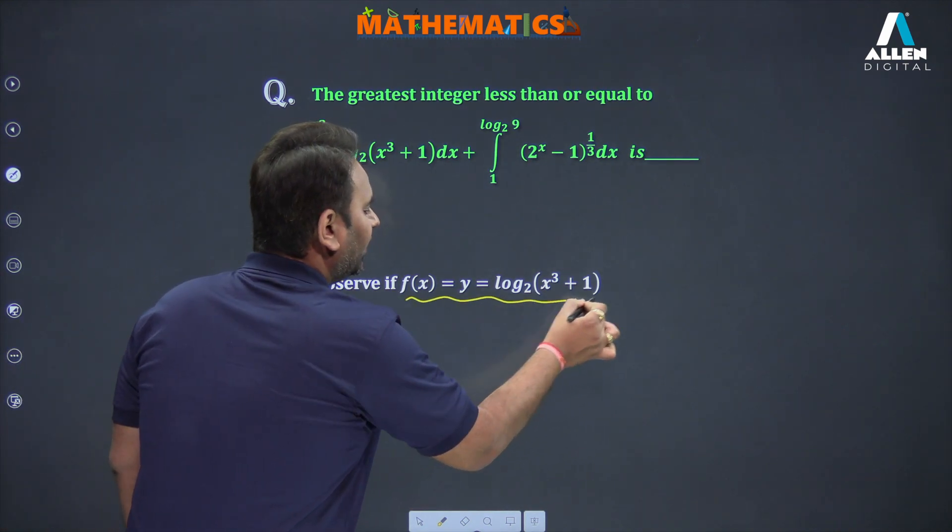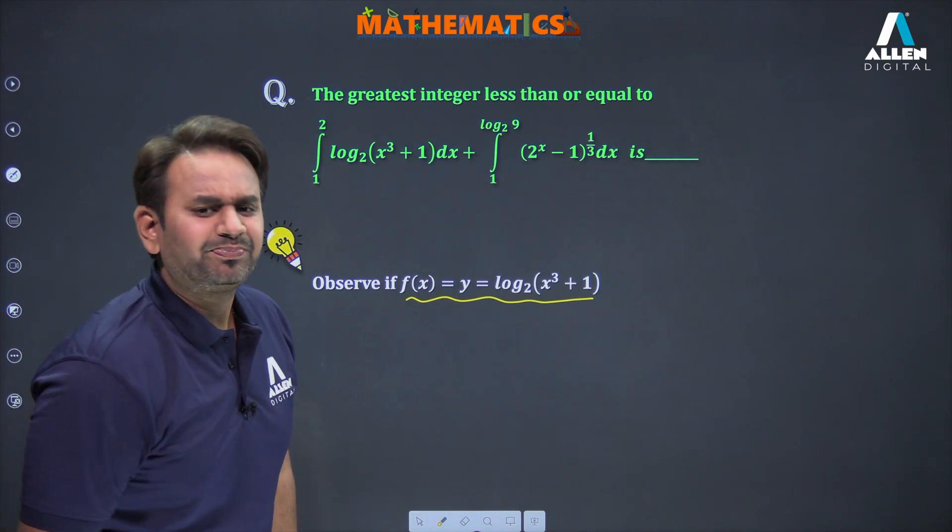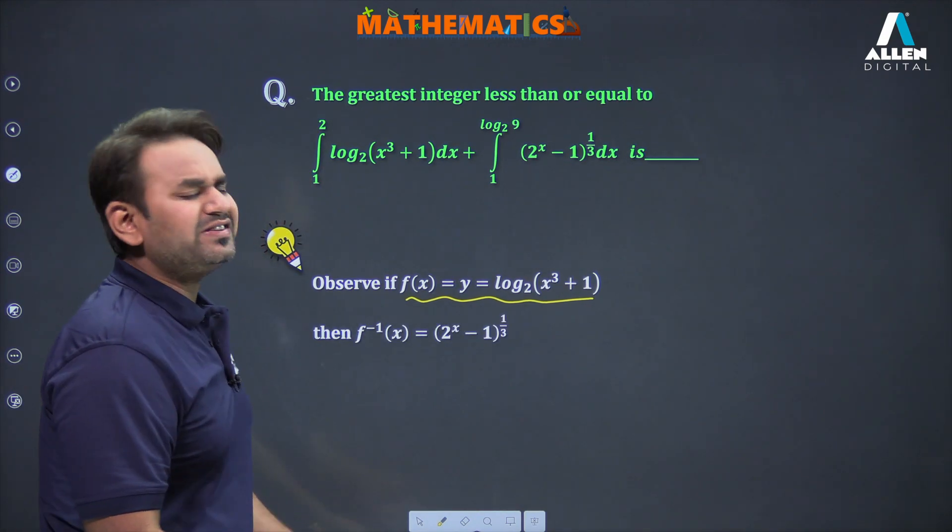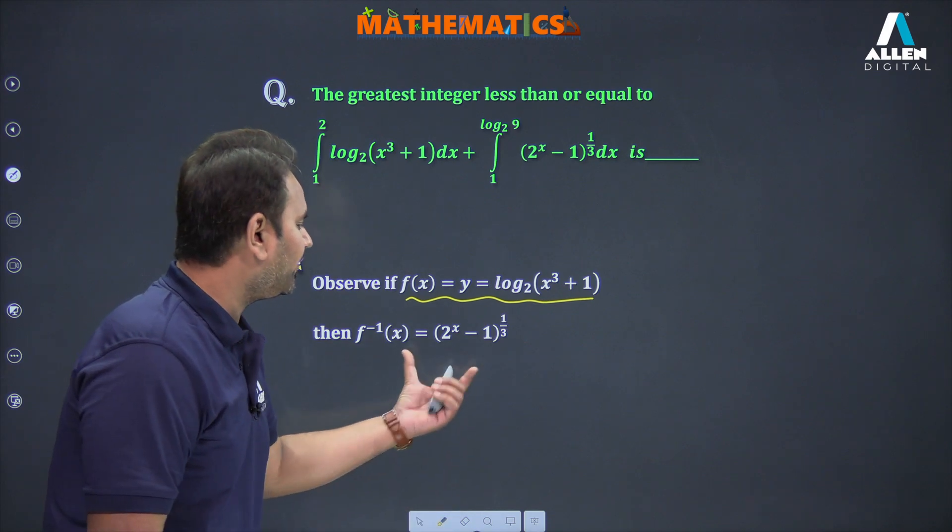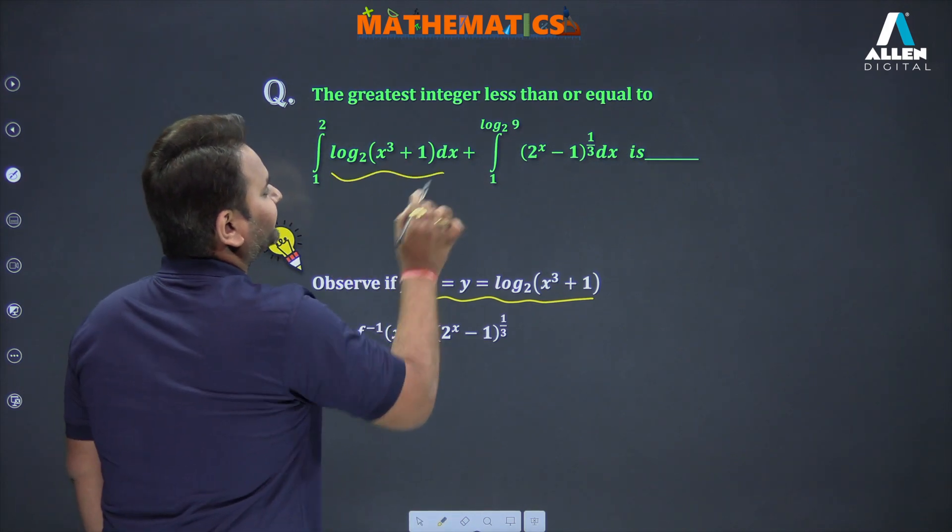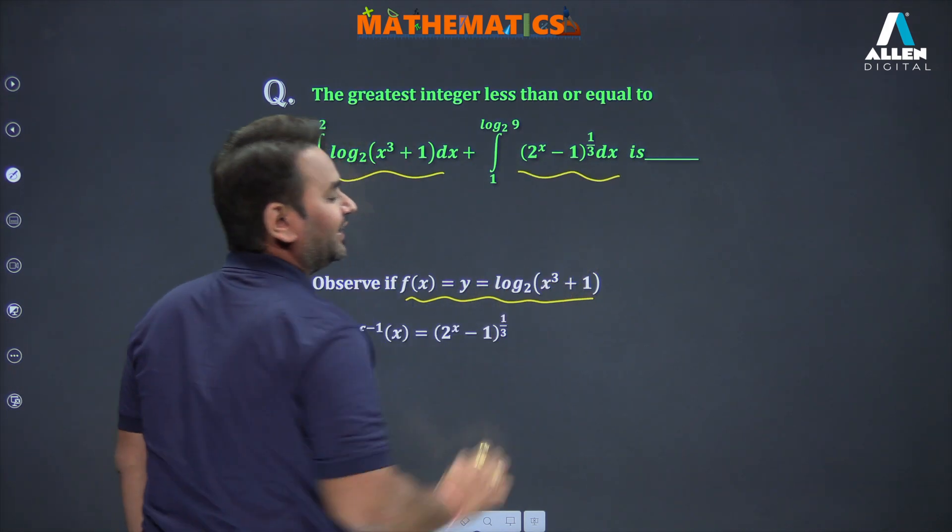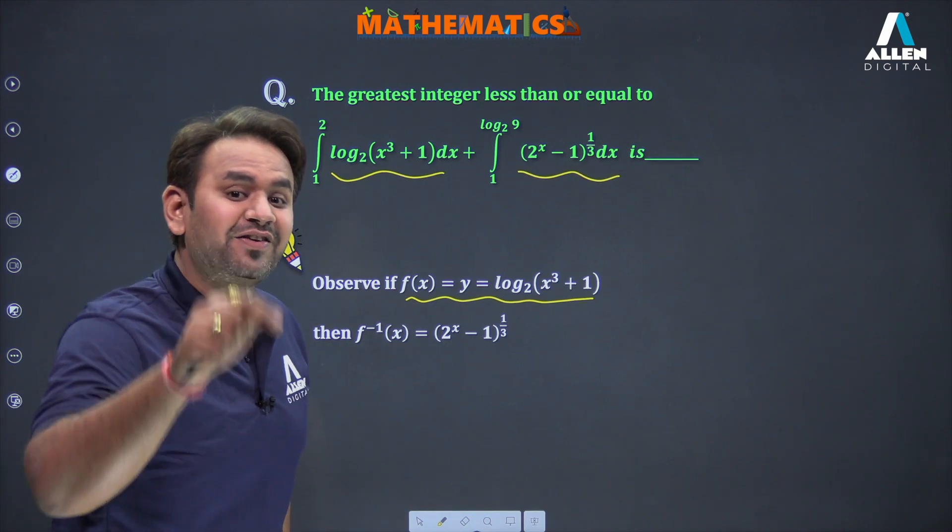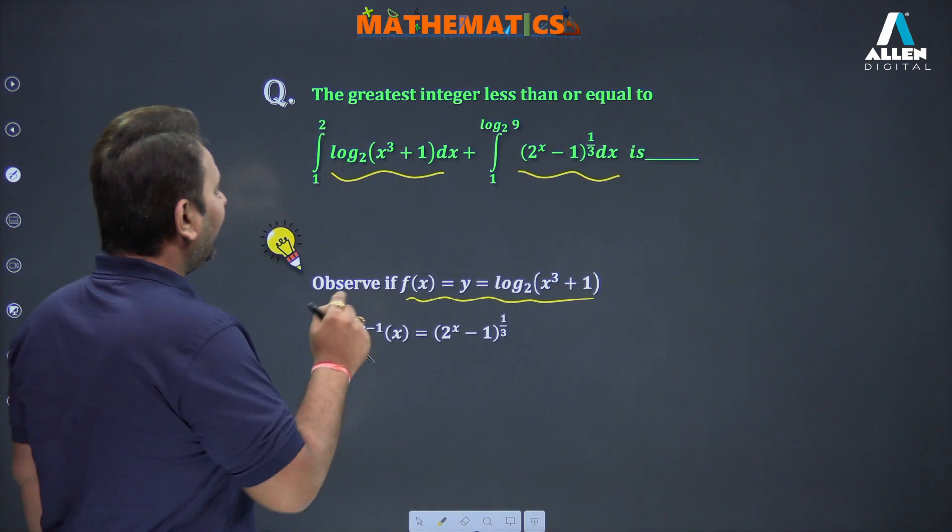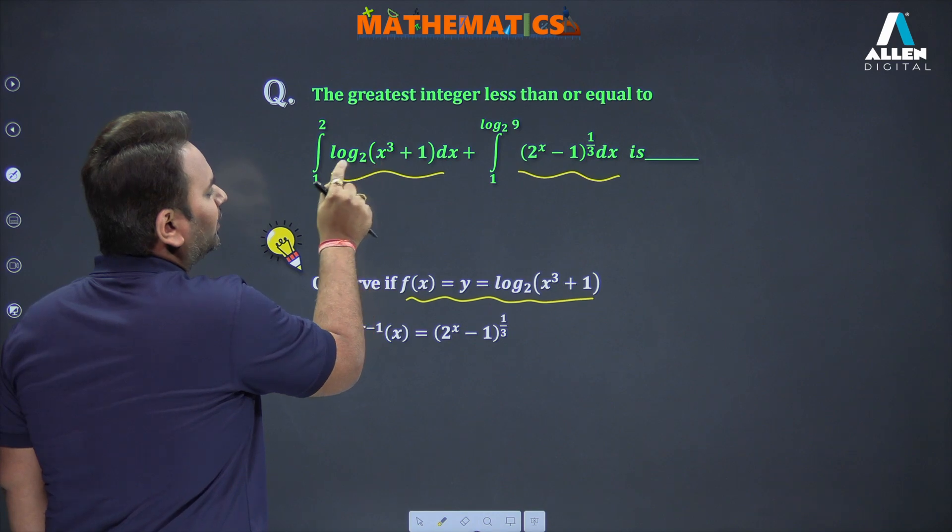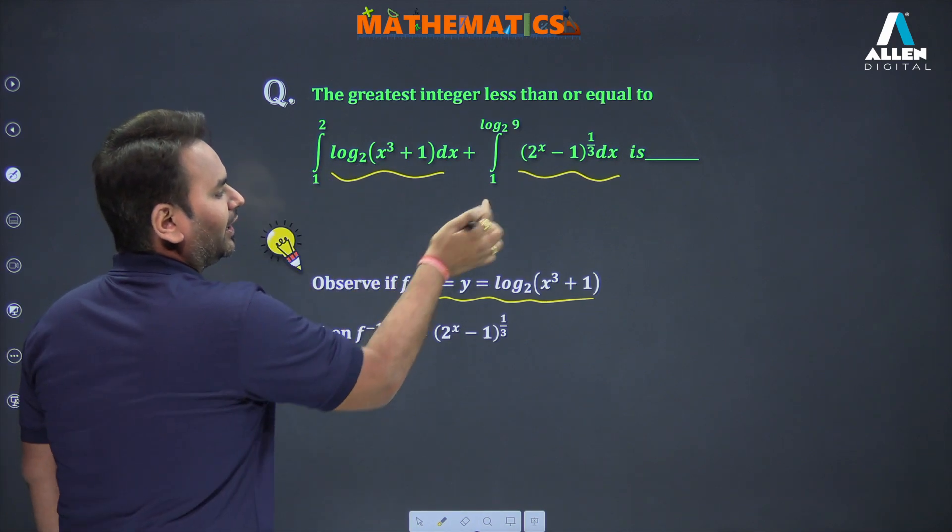You can see that if I observe, my function f(x) is log base 2 of (x³ + 1). So what will be its inverse? Obviously, it's (2^x - 1)^(1/3). So this is f(x) and this is my f inverse x. That's the first observation. The second observation is about limits.